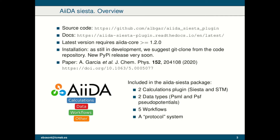Our package comes with two calculation plugins: one for the main SIESTA code and one for a post-processing tool that calculates STM images. Then we have two data types in addition to the AiiDA data types, for the management of pseudopotentials in the PSML and PSF formats. Moreover, we have five workflows and what we call a protocol system, which I will explain later.